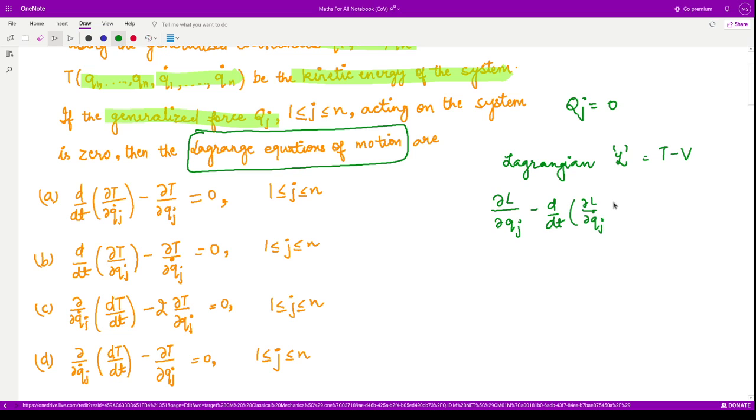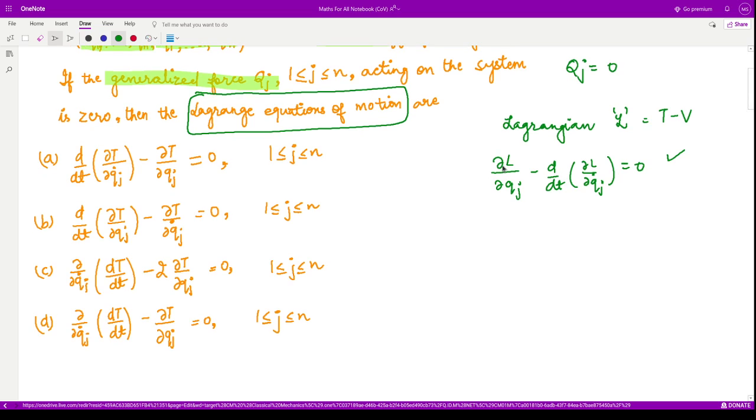The Lagrange equation is given by ∂L/∂qj minus d/dt(∂L/∂qj dot) equals zero. This is the equation you might have studied in calculus of variations as well.